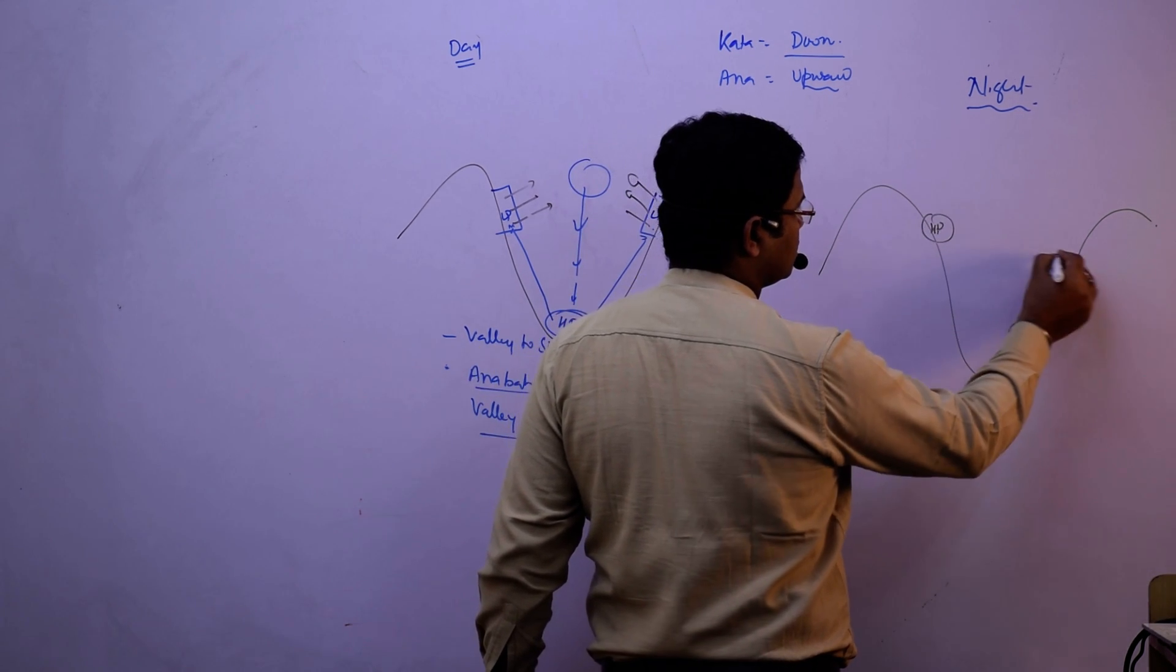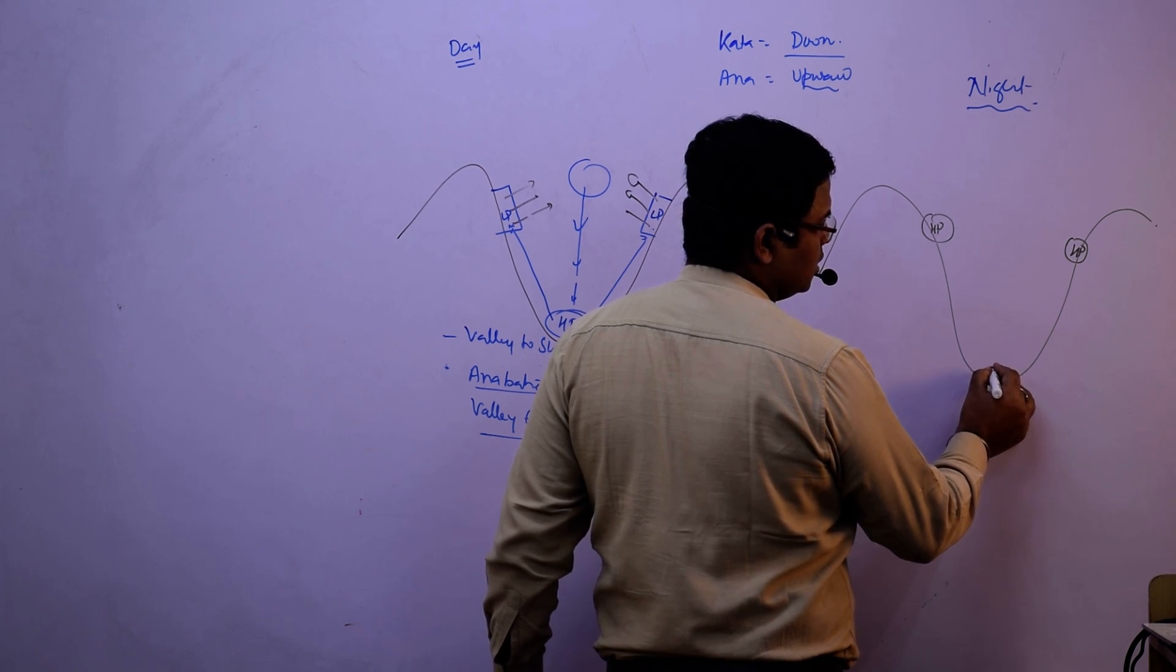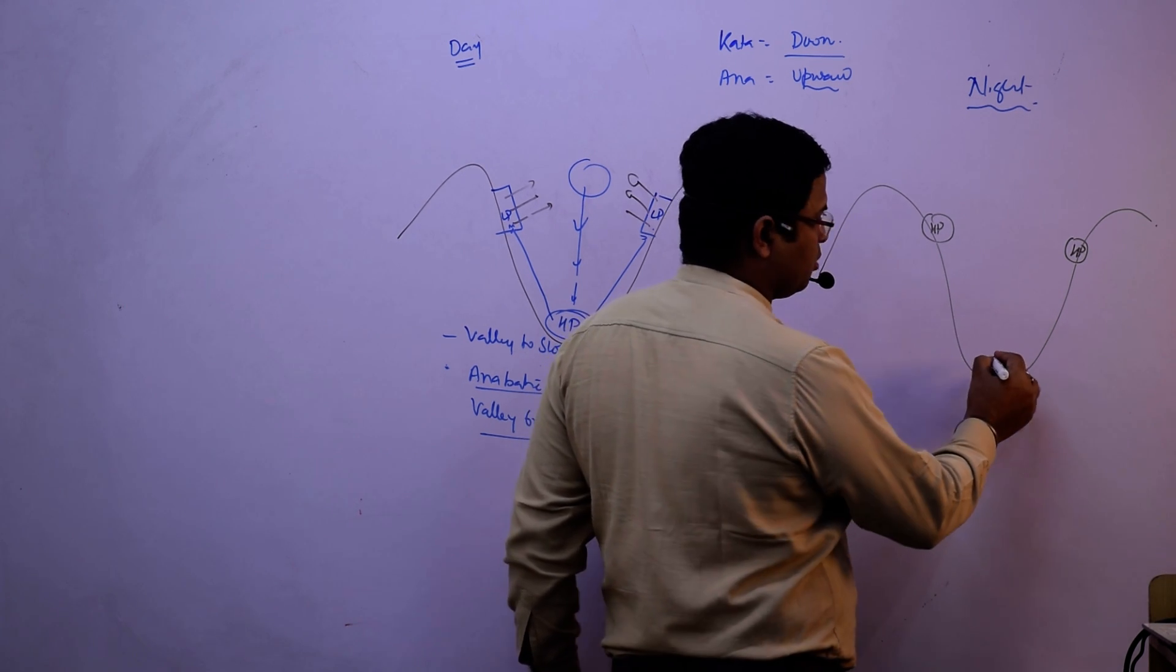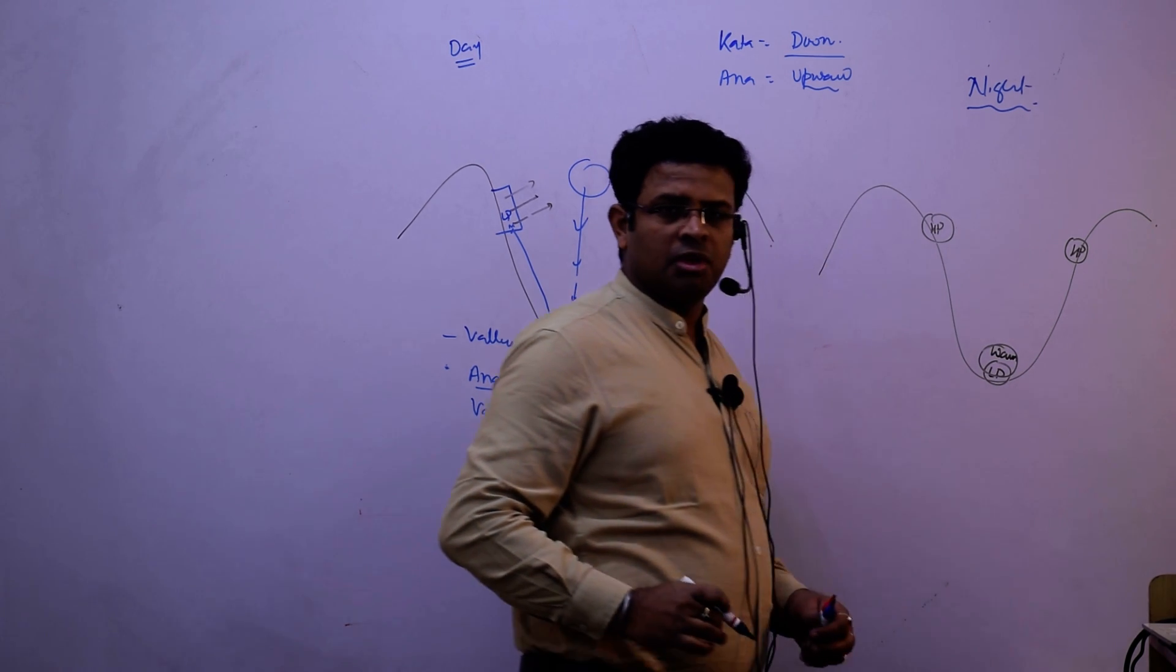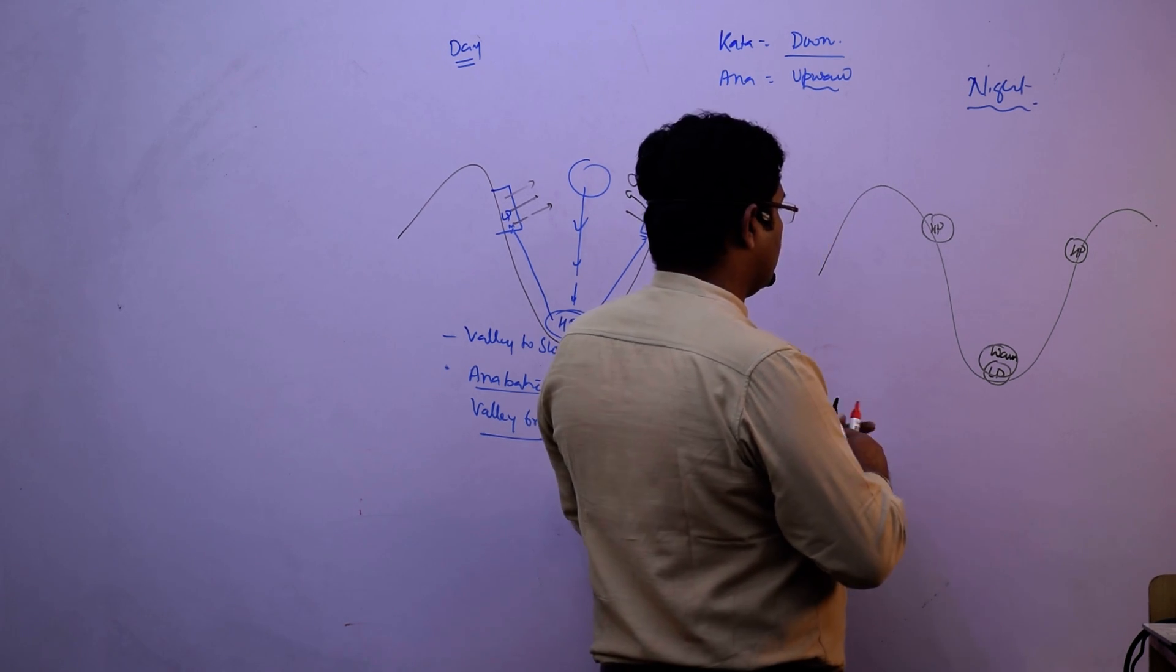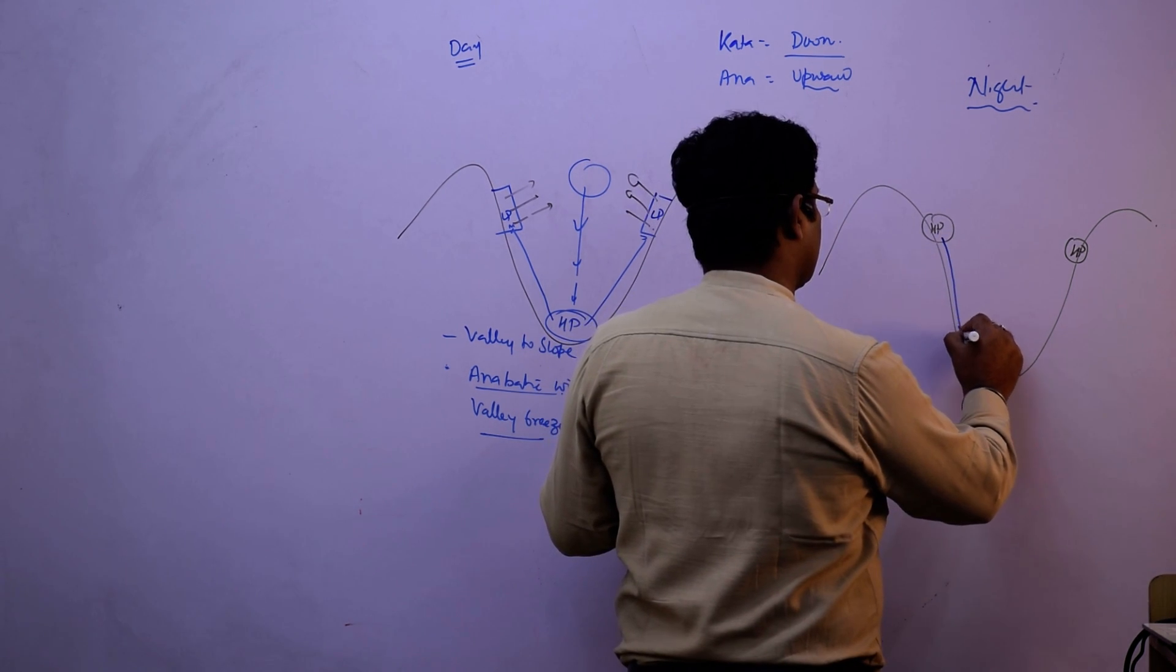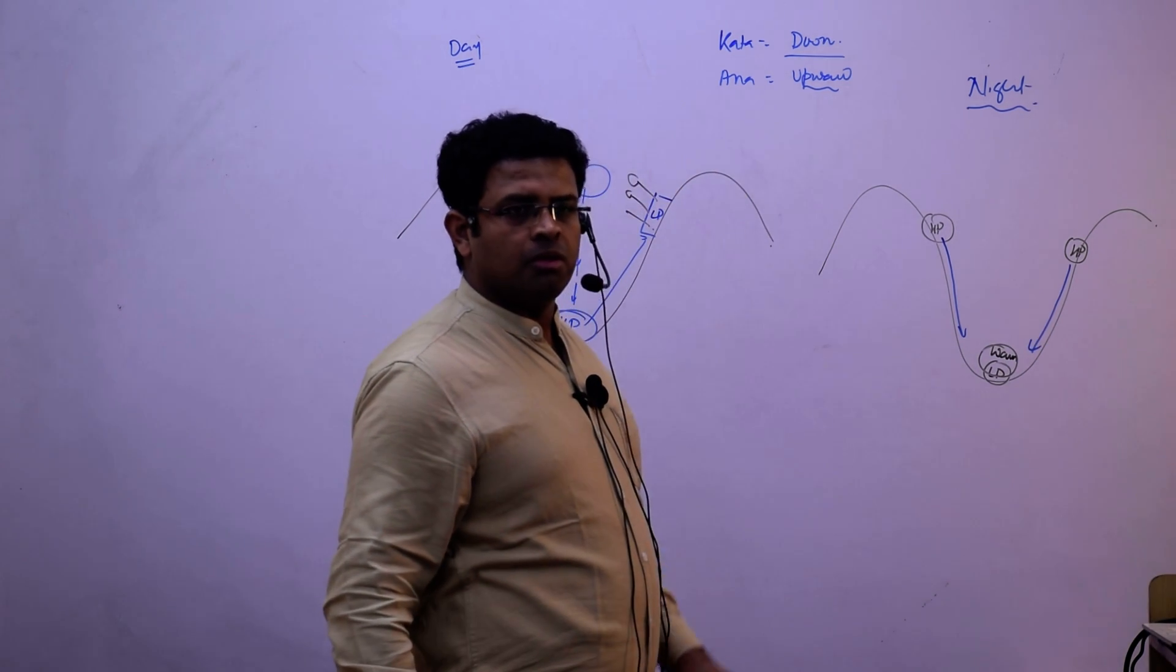And this will be low pressure, comparatively low pressure. It means comparatively warm. And in night time, wind will move from mountain to valley, mountains to valley.